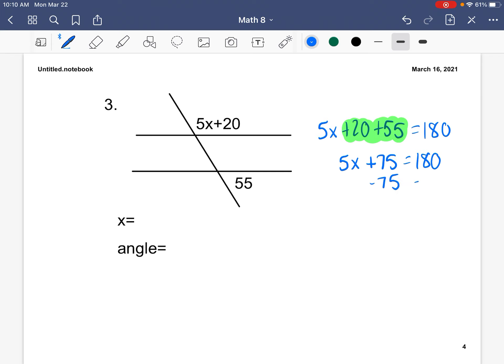Then we are going to subtract 75 from both sides, and we get 5x equals 105. Then we are going to divide by 5, and we get x equals 21.